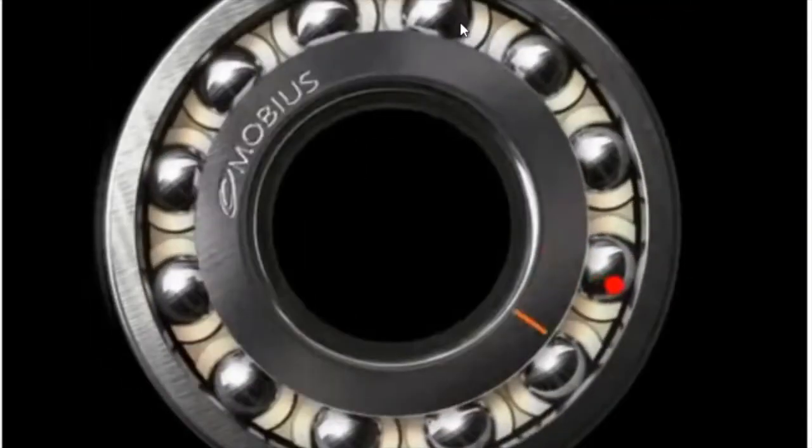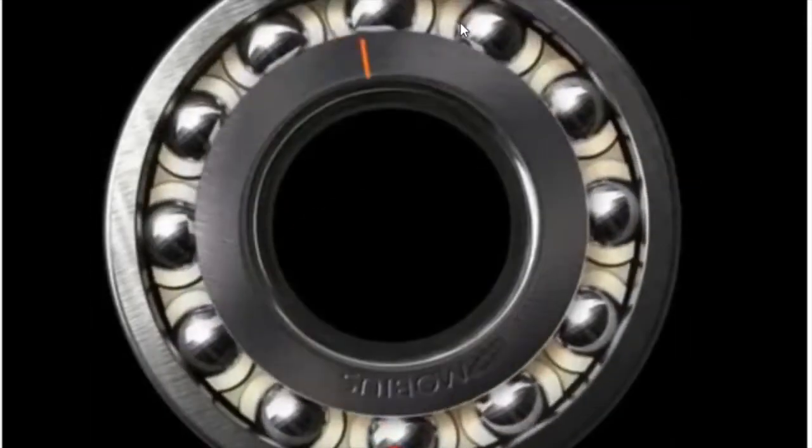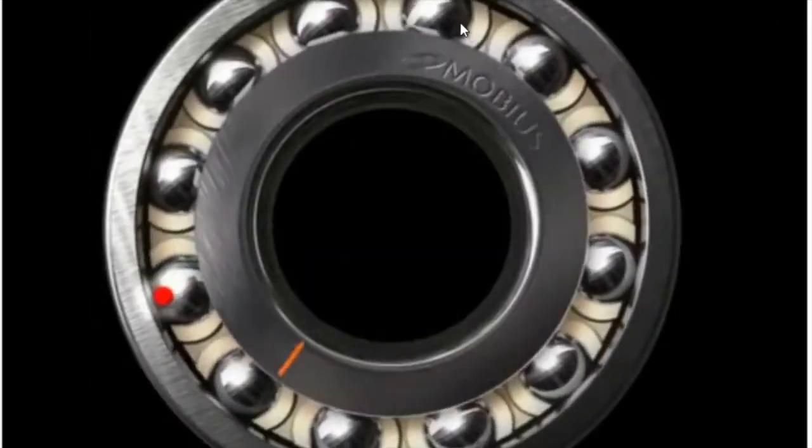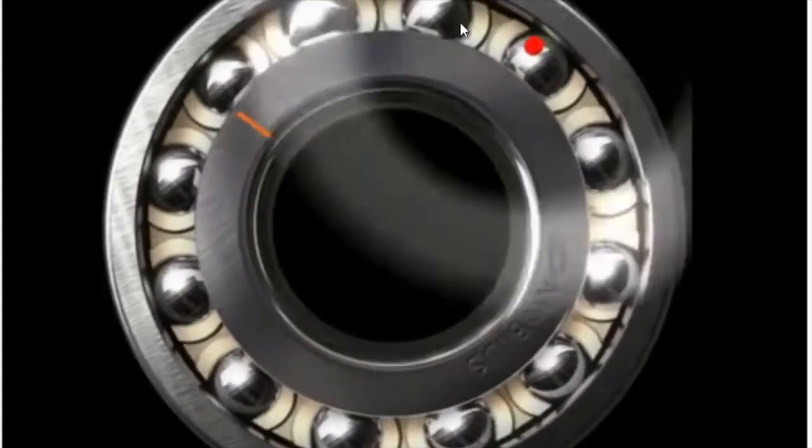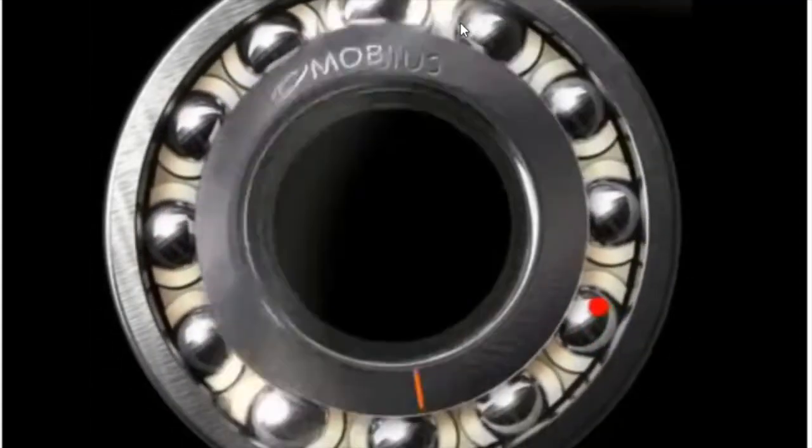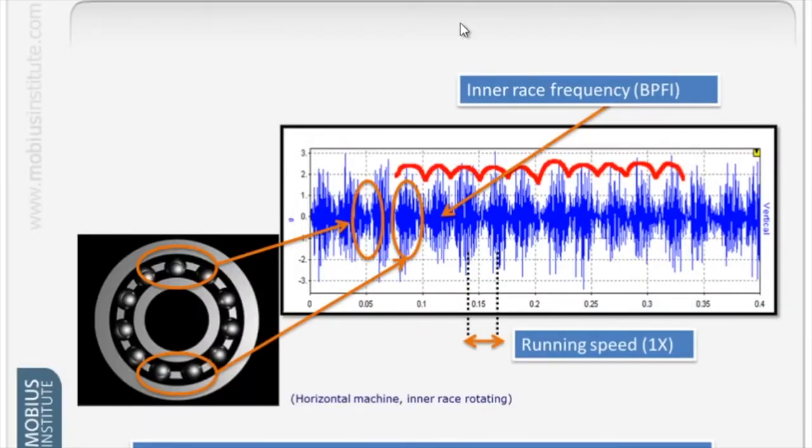Imagine here we have a rolling element that is damaged, and that rolling element rolls up out of the load zone and now it's going to go down into the load zone. This is what the time waveform shows us. In the load zone is where the amplitude's highest; out of the load zone is where the amplitude's lower. That's the load zone taking all the weight of the machine, and that's not taking the weight, so the impacts are weaker.